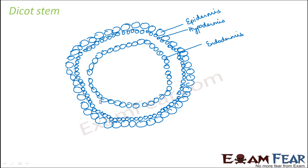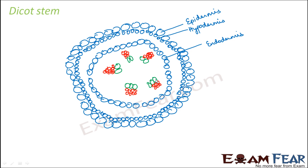Now what about the vascular bundles? Here also we will see that the vascular bundles are in a scattered form. However, the pattern of the vascular bundle is a little different than that of the monocot stem. The vascular bundle is arranged in a ring pattern. This is your xylem and this is phloem, and they together constitute the vascular bundle which is in a ring pattern.